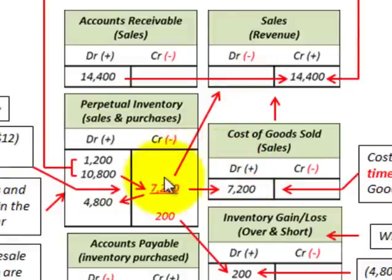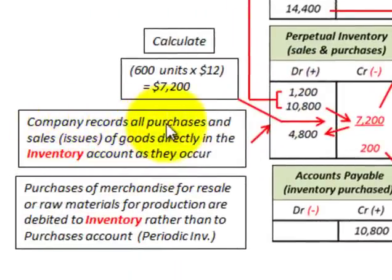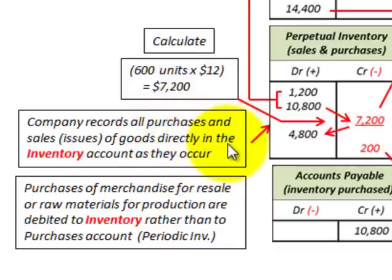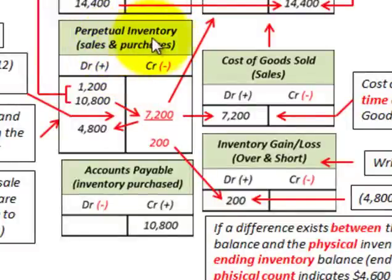Let's take a closer look at the perpetual inventory account. With this system, the company records all purchases and sales of goods directly to the inventory account as they occur. If we have a sale, we update the inventory account downward; if we have a purchase, we increase it. Purchases for resale are debited directly to inventory rather than to a purchases account, unlike in the periodic inventory system.